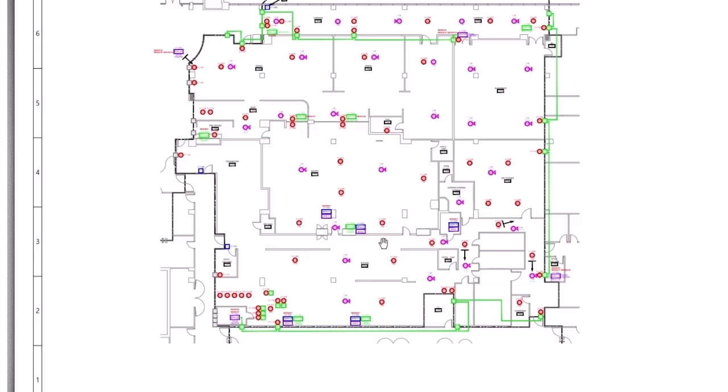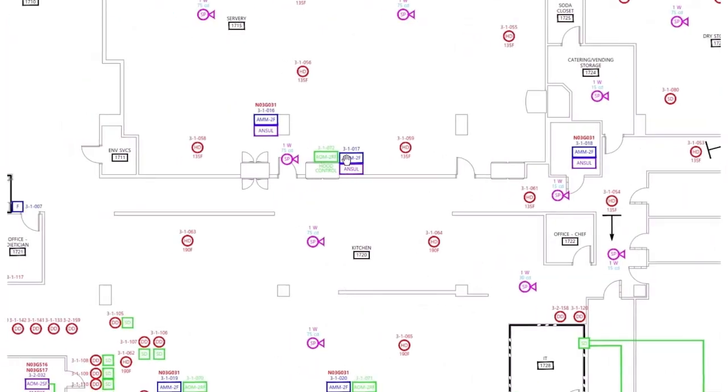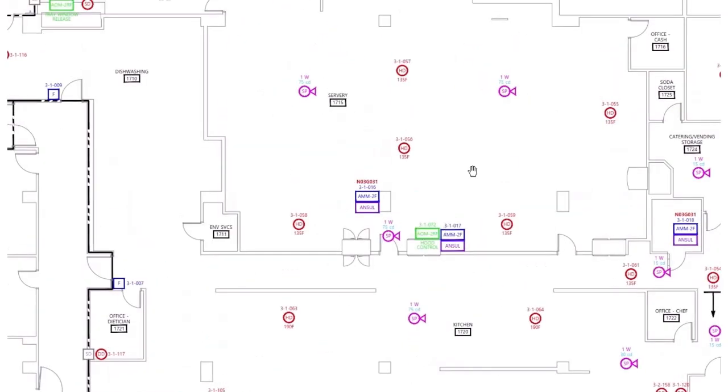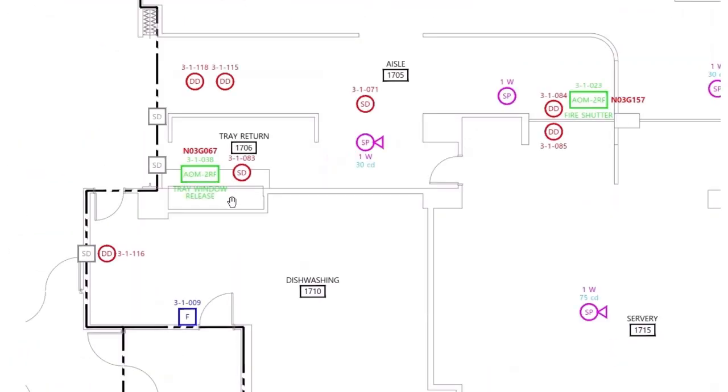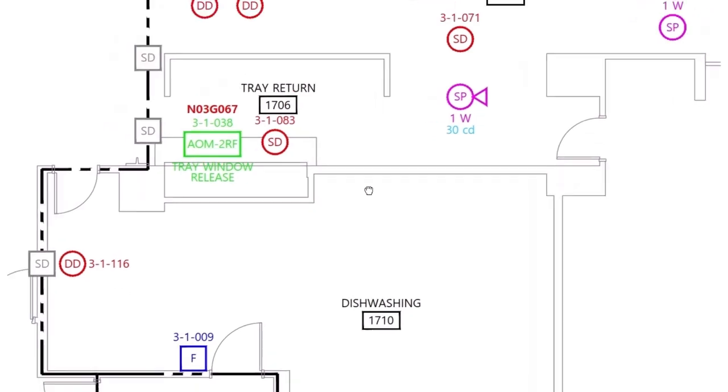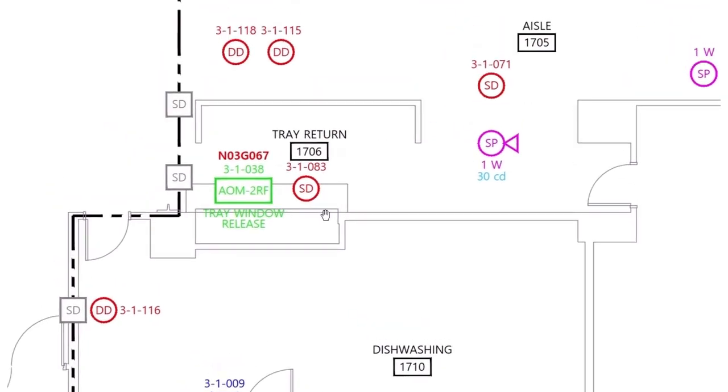What we're showing here is a commercial kitchen. It's got the kitchen area here where they do the cooking, the servery, a dishwashing room here and a tray return. And what occurred was they discovered shortly after, probably a month or two, that the dishwashing equipment was letting out steam. Steam was getting to the smoke detector and causing a false alarm.